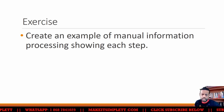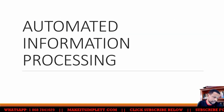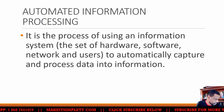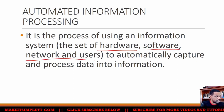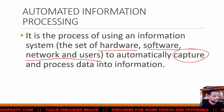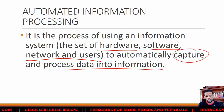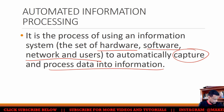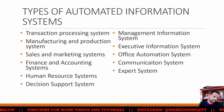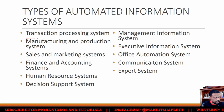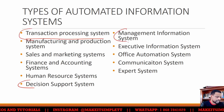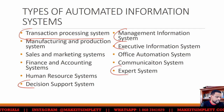You want to make sure that your process is without fault. So, automated information processing is using hardware, software, networks, and users to automatically capture and process the information. The types of information systems in the syllabus would be TPS, TSS, MIS, EIS, and expert system.